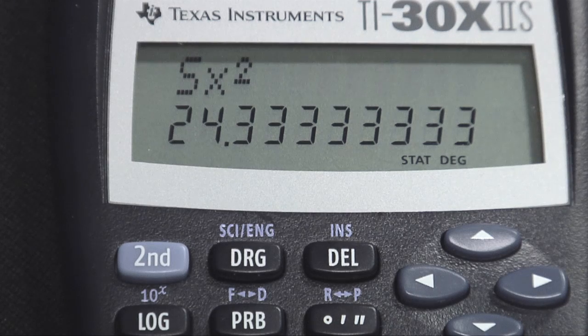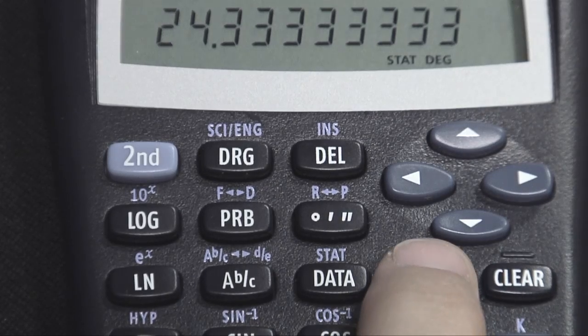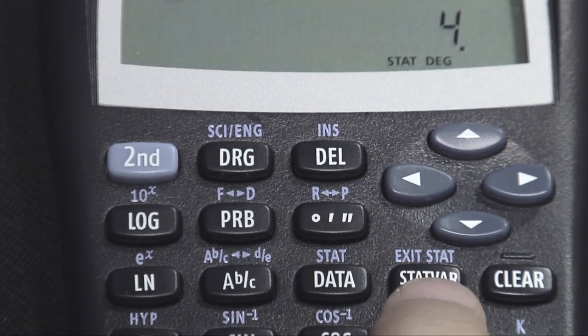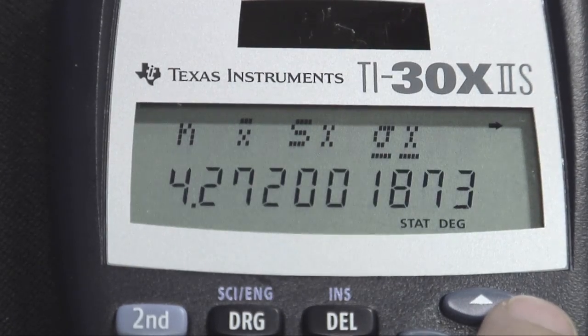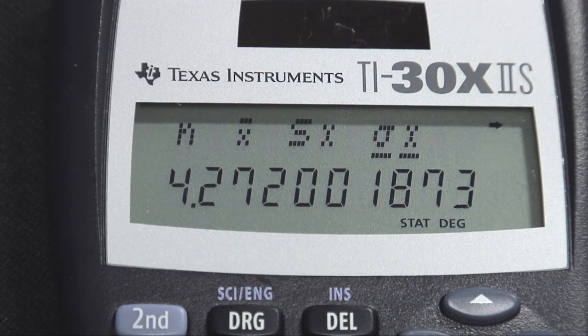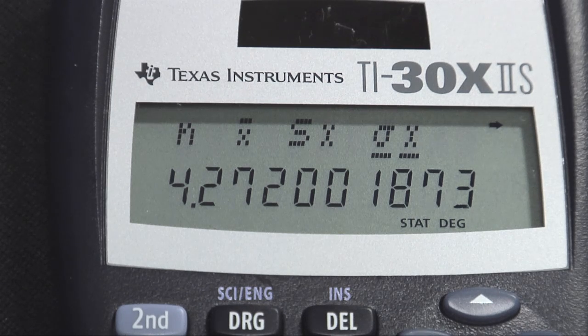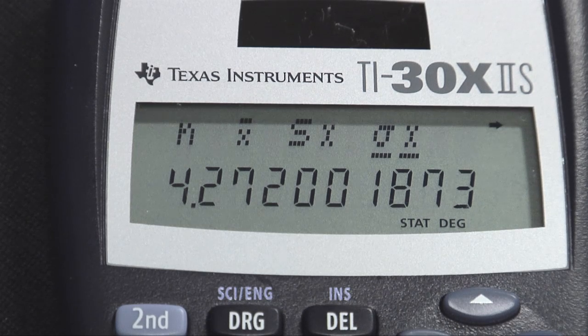But what if that wasn't sample data you were using? What if that was population data? Then those four numbers, hitting stat var again, give you population information also. As I scroll over to the last option I see here, sigma sub X, sigma with a subscript of X, 4.272, etc. This number was smaller than the sample standard deviation, because the population standard deviation will always be smaller.